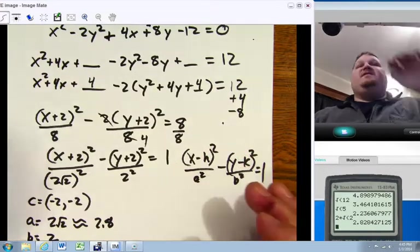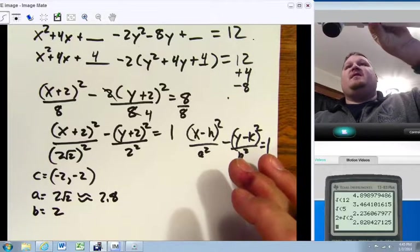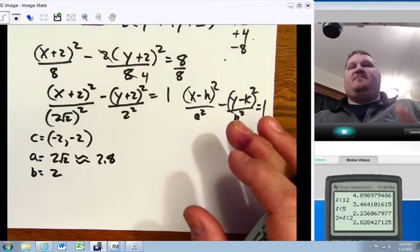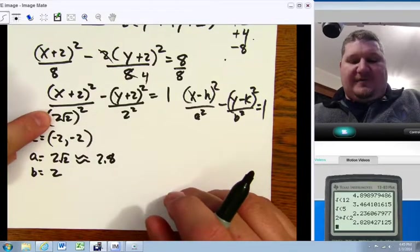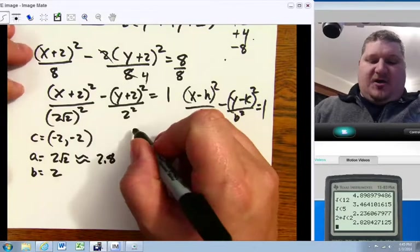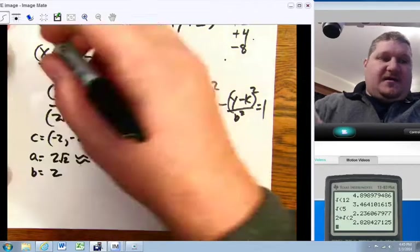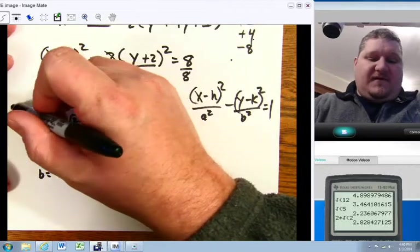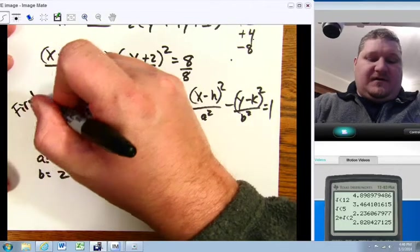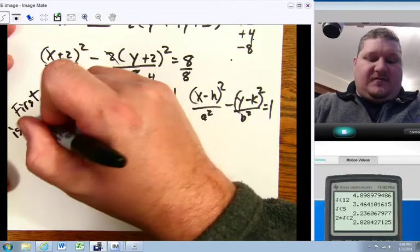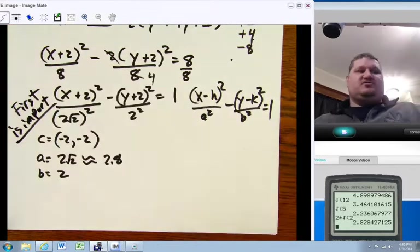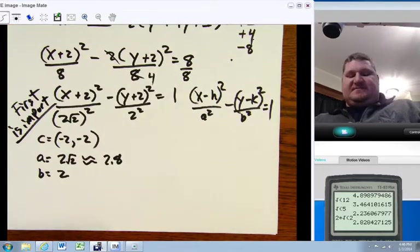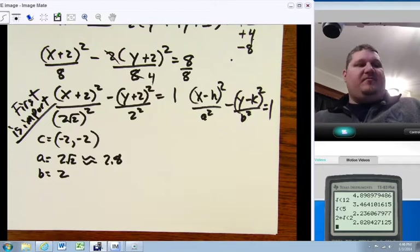Now, this is a hyperbola. If you'll remember, in an ellipse, A and B were determined by who was bigger. In this case, this one happens to be bigger. But in a hyperbola, first is important. First is what counts. In an ellipse, size matters. In a hyperbola, being first matters.